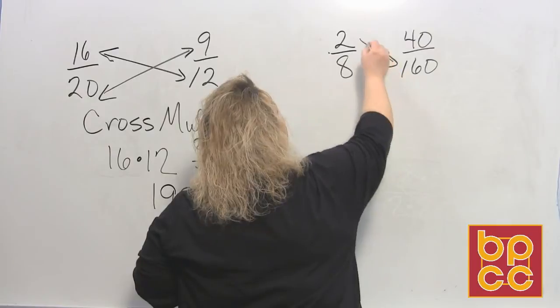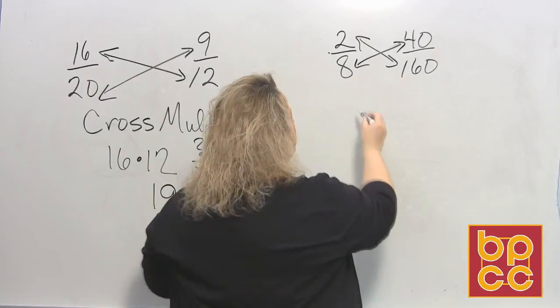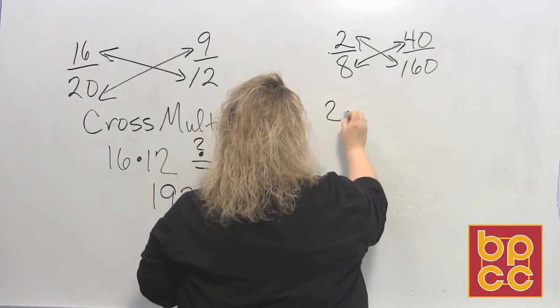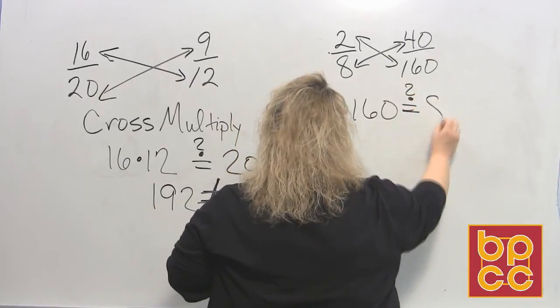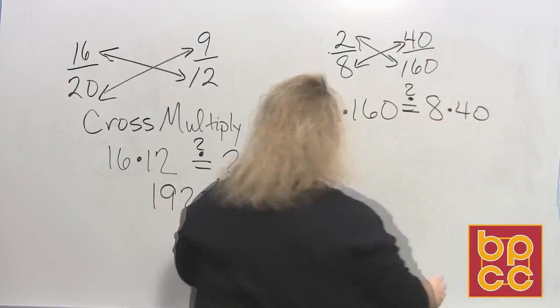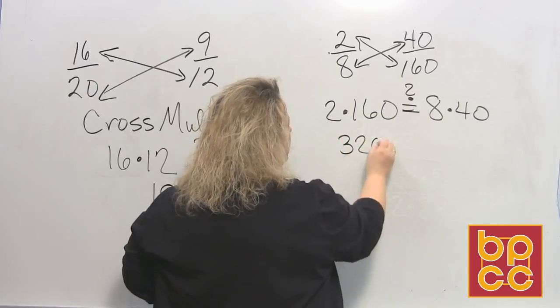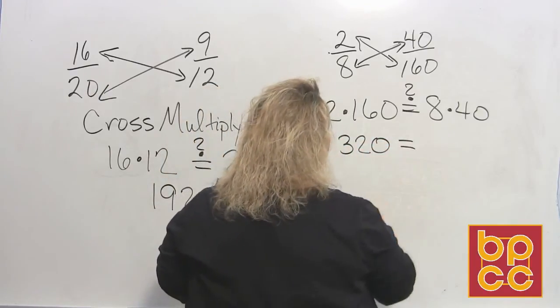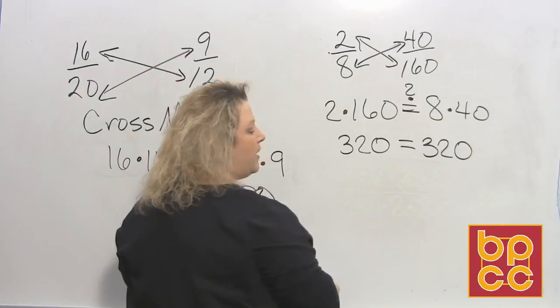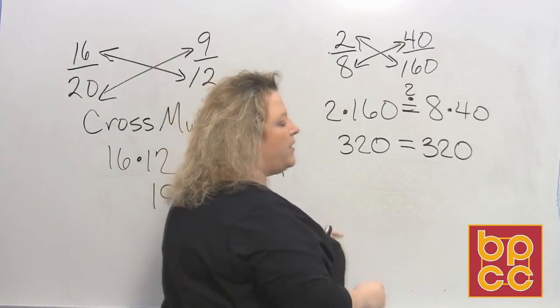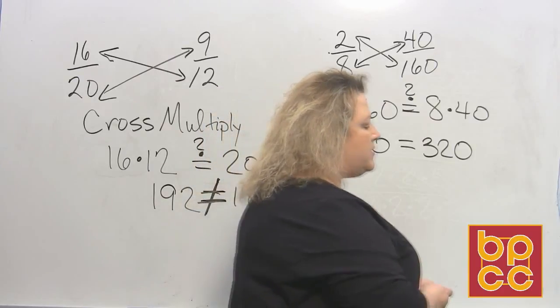Now we come over to our last group. We already know that they're going to be equivalent fractions because we just reduced them and found that out. But to prove it this way, we do 2 times 160 supposedly is equal to 8 times 40. So the shortcut method is 2 times 16. 2 times 16 is 32. Add a 0 to the end because that's multiplying by 10. That's the shortcut. 8 times 4 is also 32. Add one 0 at the end. And they are equal. So those are the two methods to find out equivalent fractions. Cross multiplying is obviously the fastest way, but sometimes it's not as obvious.